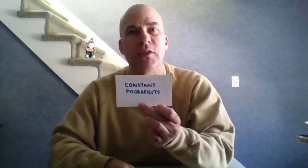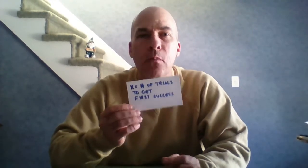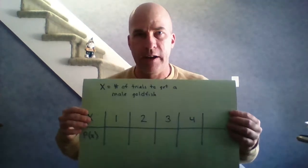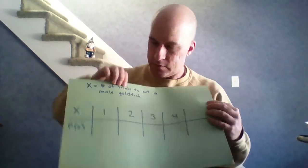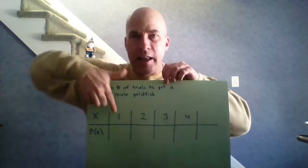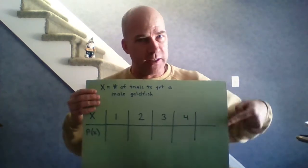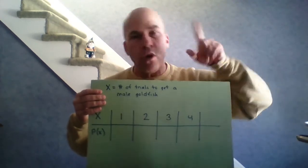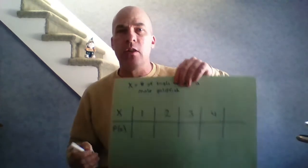For the geometric distribution, we note: each observation falls in just one of two categories — success or failure. The probability of success is the same for each observation (constant probability). The observations are independent of each other. The key difference is that the variable of interest is the number of trials it takes to get the first success — how long will it take to get our first male fish? We let X equal the number of trials to get a male goldfish and set up a probability chart.